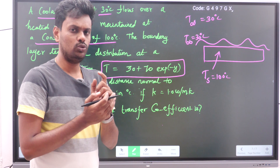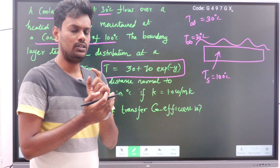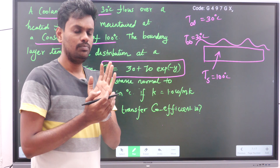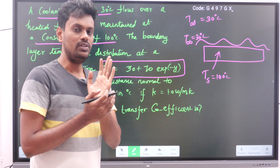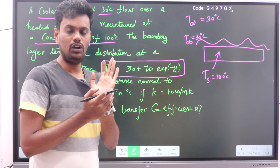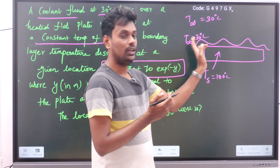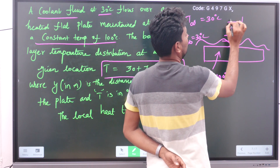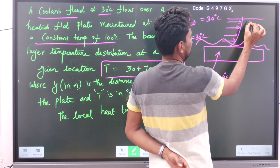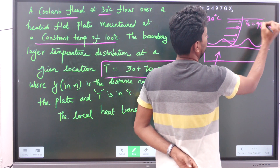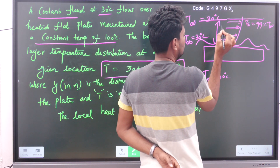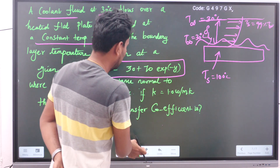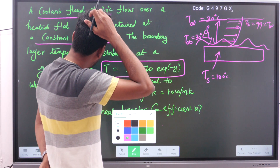As we discussed in the thermal boundary layer concept, the fluid layer adjacent to the surface of the plate will be at the temperature of the plate. Moving upward, after some height — the thermal boundary layer thickness — the temperature reaches the free stream temperature of 30 degree Celsius. At that thickness point, T_s equals 99% of T infinity.